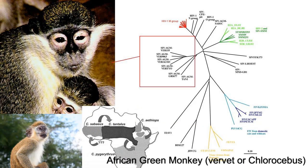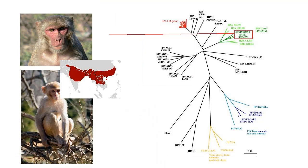For example, the simian immunodeficiency virus strain that infects African green monkeys doesn't usually cause much disease to its host. The rhesus macaque also has a strain of SIV that causes little or no disease.